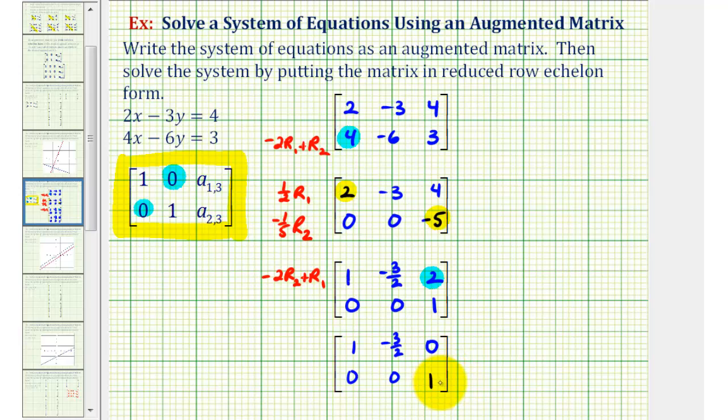So now we're going to write this back as a system of equations. So looking at the first row, this is telling us that one x minus three-halves y equals zero, or x minus three-halves y must equal zero. The second row is telling us that zero x plus zero y equals one, or zero equals one. So whenever we obtain an equation that doesn't contain variables, it's either going to be always true or always false.